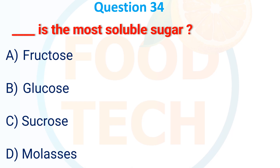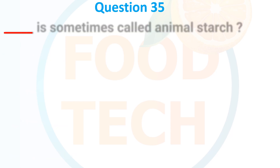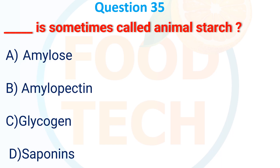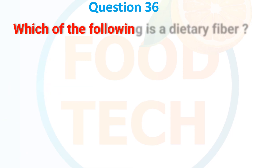Question 31: Which is the most soluble sugar? A. Fructose, B. Glucose, C. Sucrose, D. Molasses. The answer is A. Fructose. Question 32: Which is sometimes called animal starch? A. Amylose, B. Amylopectin, C. Glycogen, D. Saponin. The answer is C. Glycogen.